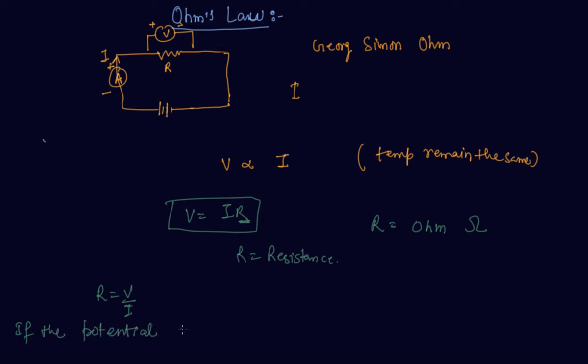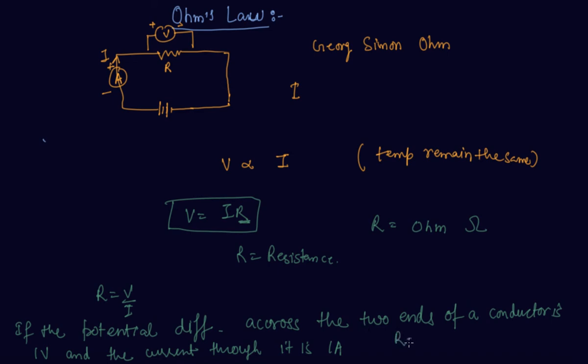If the potential difference across the two ends of a conductor is one volt and the current through it is one ampere, then the resistance is called one ohm, equal to one volt by one ampere.